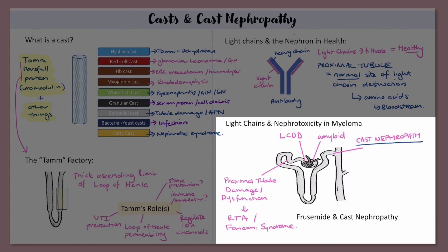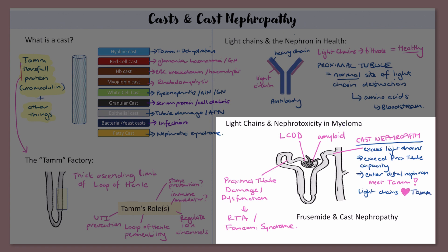It's worthwhile noting that when you send off a Bence Jones protein as part of your myeloma screen, what you're actually doing is testing for light chains in the urine. In cast nephropathy, the proximal tubule can't take up all the light chains — they gain access to the distal nephron where they'll come into contact with Tam. Light chains love Tam, and the combination of Tam and light chains results in a light chain cast. These casts clog up the nephron, cause obstruction, and attract inflammation. Cast nephropathy can be a very nasty cause of acute kidney injury.